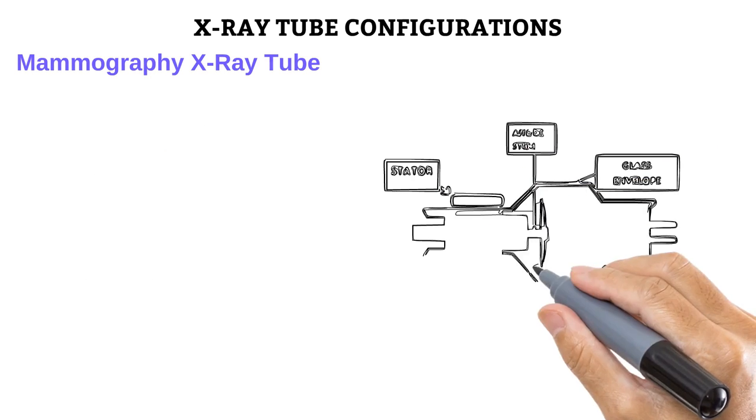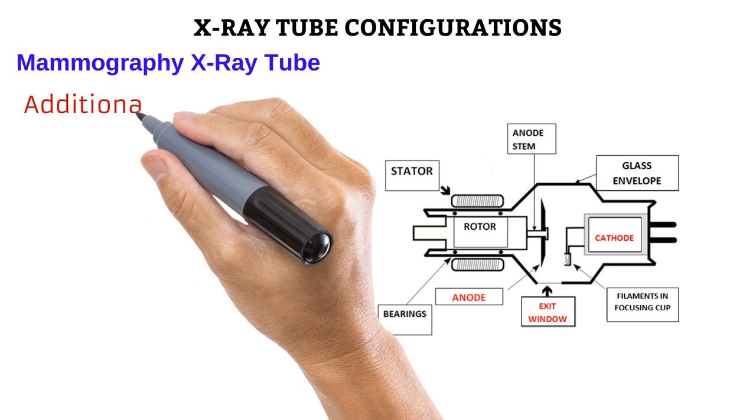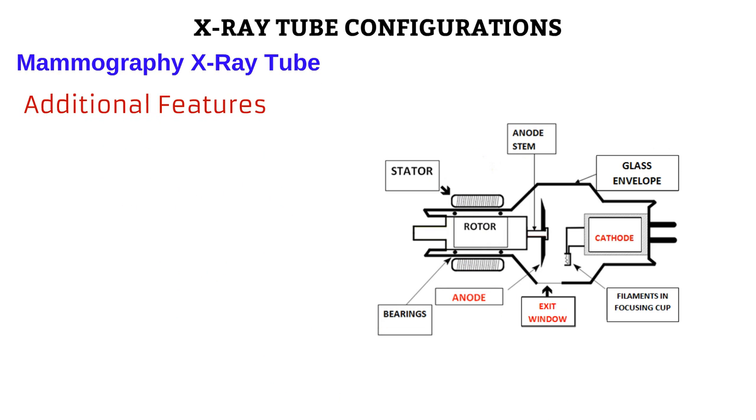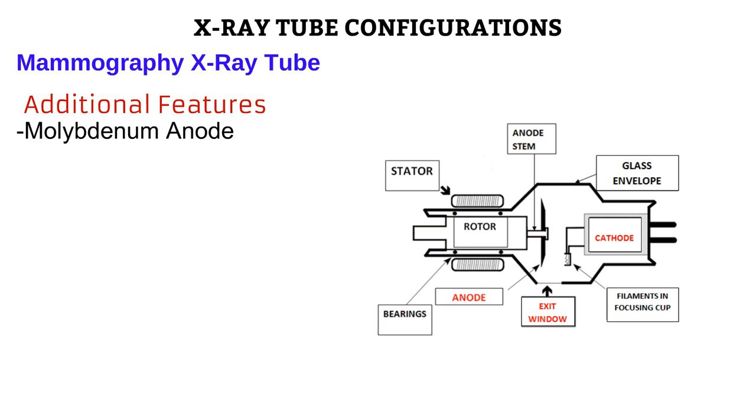Next is the mammography tube, specially designed for the mammography unit. Mammography needs a low kilovoltage due to the low subject contrast of the breast tissue. Thus, it needs a tube that can comfortably generate low-KV photons. Instead of the standard tungsten anodes, mammography tubes are made of molybdenum anodes, which offer a narrow spectrum of X-ray photons, which fall within the low-energy range needed.